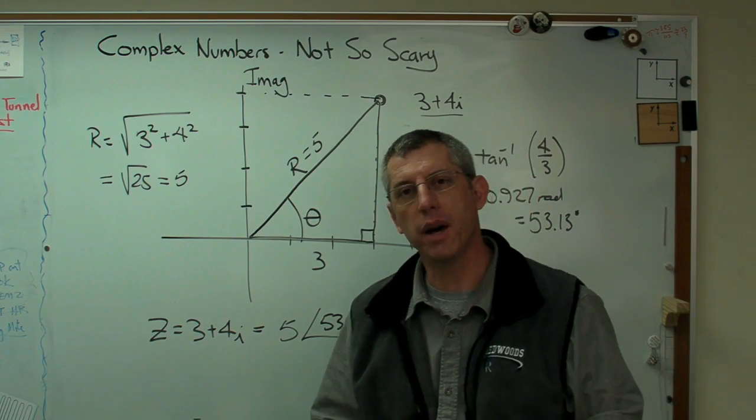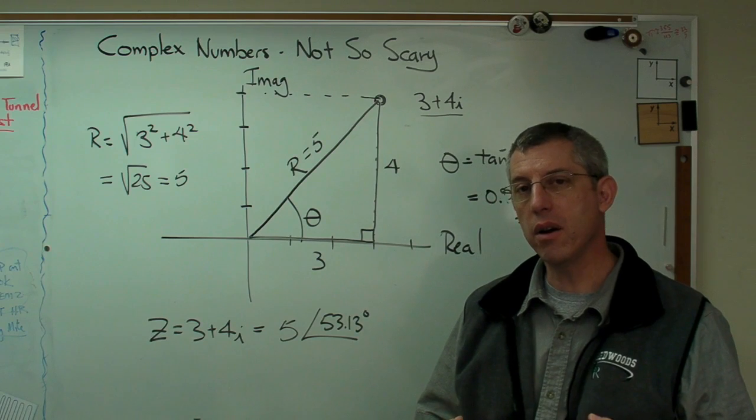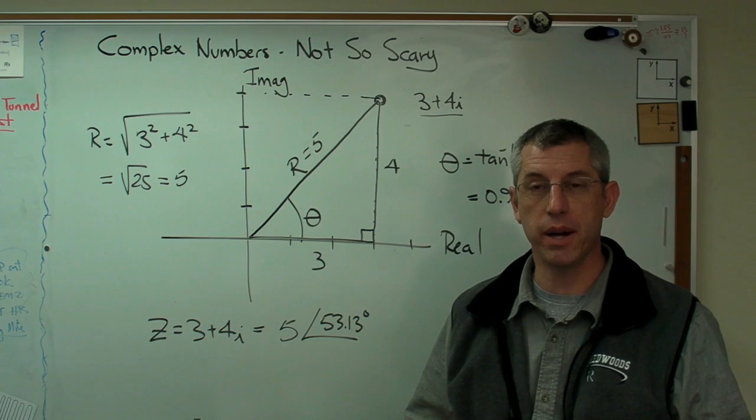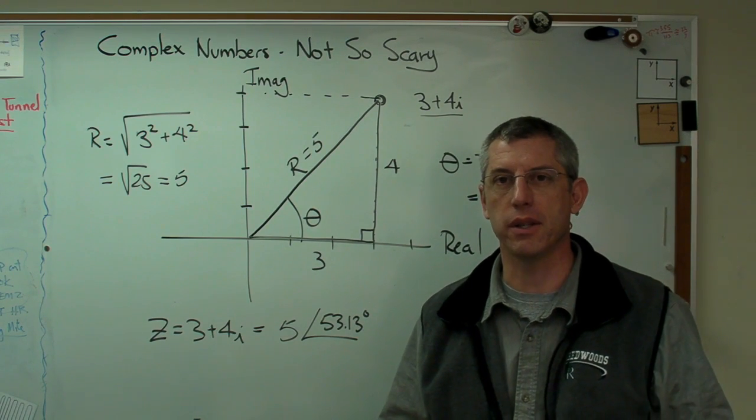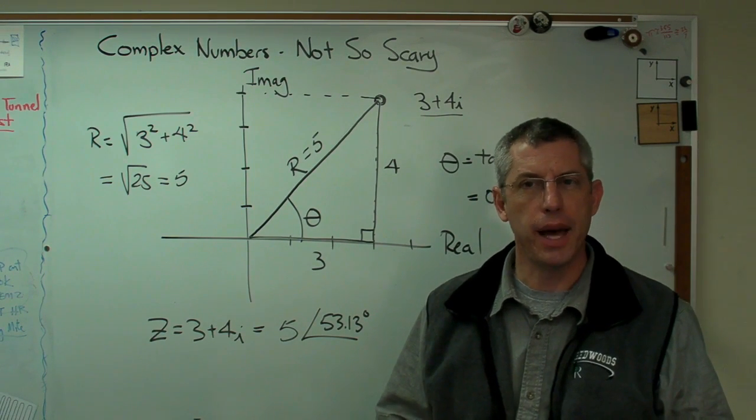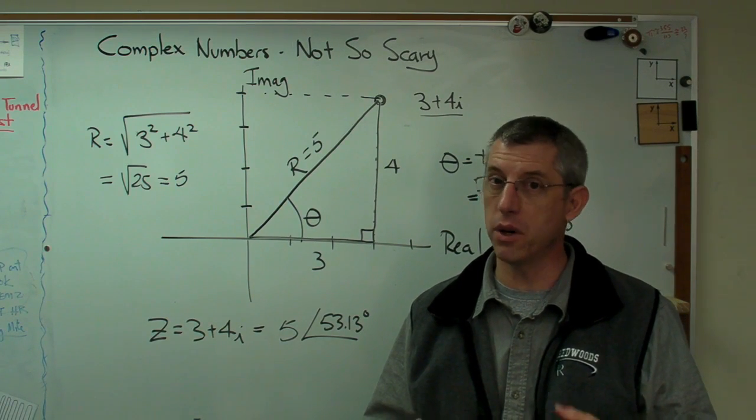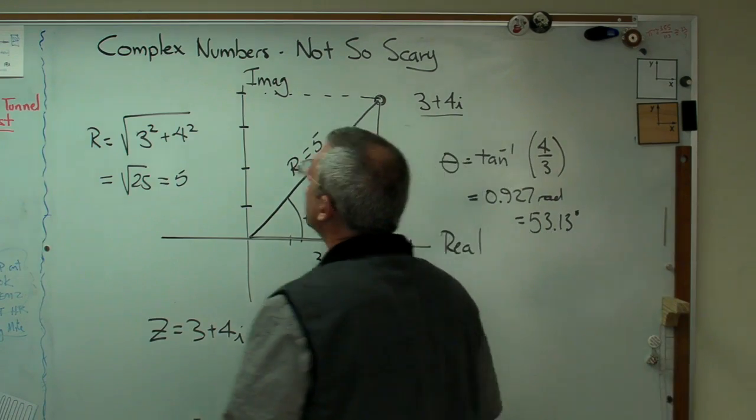Well, the problem with that was when they started hanging on to those and working with the square root of minus one as if it were a legitimate mathematical entity, they kept getting the right answer. Oh. All right. Well, that means if you keep getting the right answer, that's pretty strong evidence that maybe that square root of minus one is okay. It's okay to work with that.